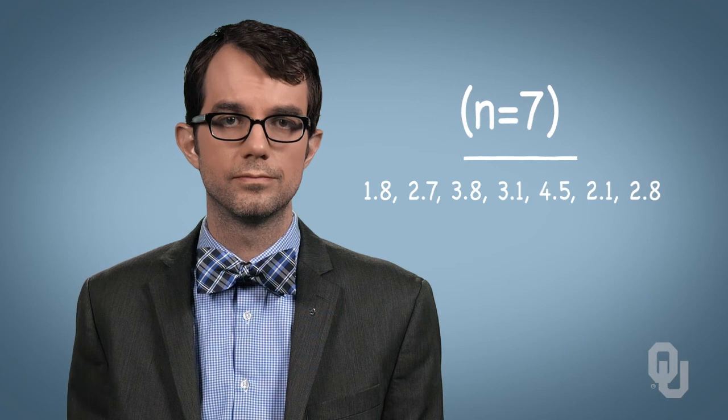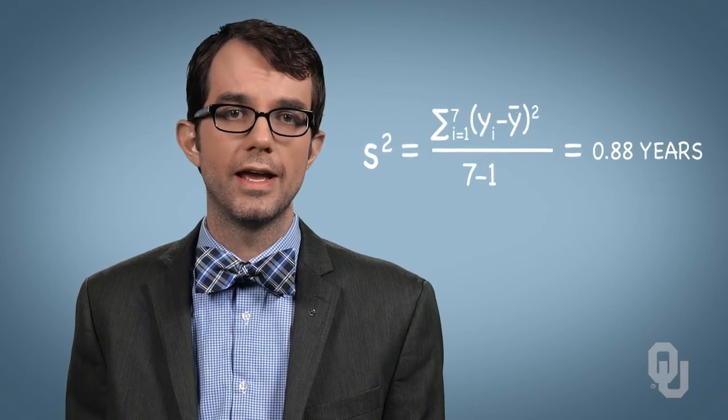For example, assume that a manufacturer of car batteries claims that its batteries will last on average three years, but is curious about the variance of battery life. A life testing experiment with n-equal-seven batteries found the battery lifetime shown on the screen. The variance of this sample is s-squared equals 0.88 years.